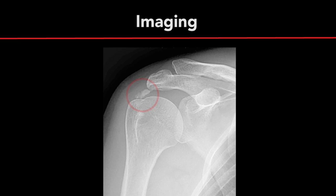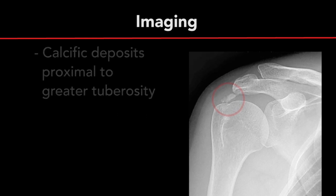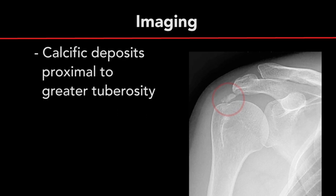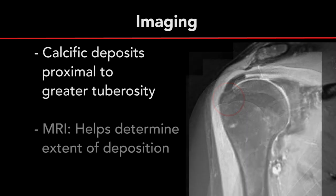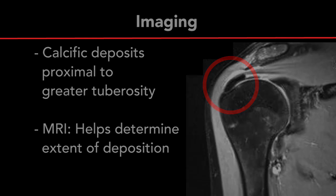The diagnosis is generally made by radiographs, which demonstrate the typical appearance of calcium deposits in the supraspinatus tendon, proximal to the greater tuberosity. An MRI is often helpful to further elucidate the extent of the calcific tendinitis.